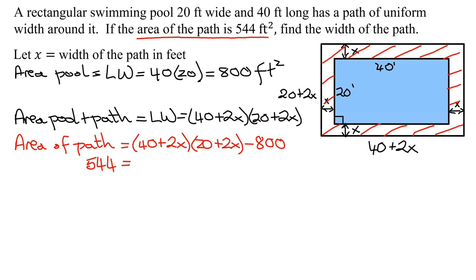So 544 equals, now I'm going to have to foil this out. 40 times 20 is 800. 40 times 2x is 80x. 2x times 20 is 40x. Plus 2x times 2x is 4x squared minus 800.